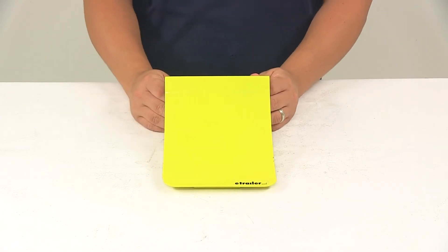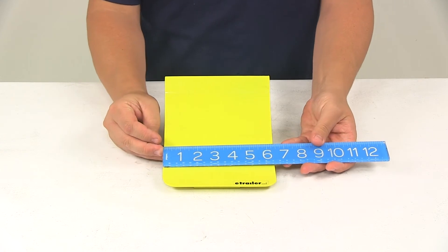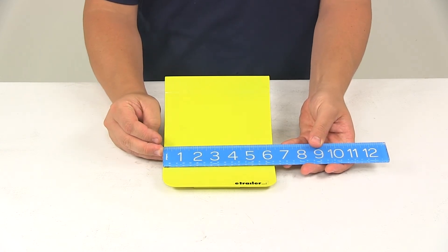A few measurements to go over with you real quick, and then we'll show you how it installs to an E-Track system. Edge-to-edge this direction, it measures six and three-eighths of an inch.